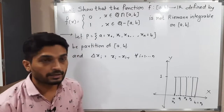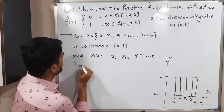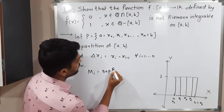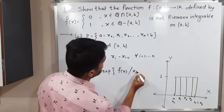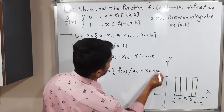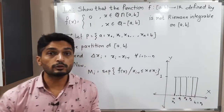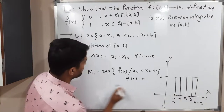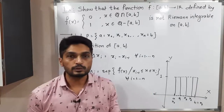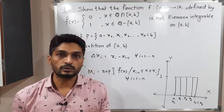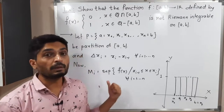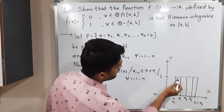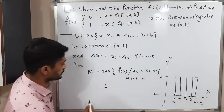Now we define capital M_i, which is the supremum of f(x) where x lies in [x_{i−1}, x_i], for each i running from 1 to n. Since the function has only two values — 0 and 1 — in each sub-interval, and we are interested in the supremum (maximum value), the answer is obviously 1. So M_i = 1 for all i.